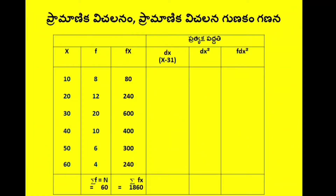Here we will check that x values are 10, 20, 30, 40, and f values are 8, 12, 20. We set up new columns for dx, dx², and fdx².